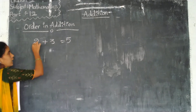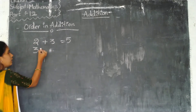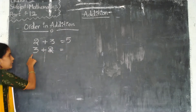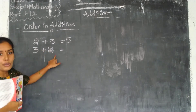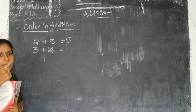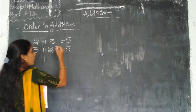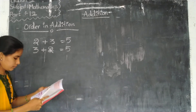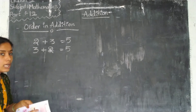Now changing the order: first three, next two. We write three plus two. Counting forward — 4, 5. Three plus two equals five. Thus, in addition, changing the order of numbers does not change the answer.